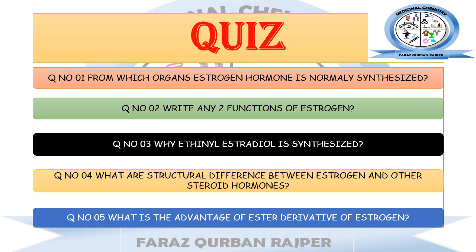Now let's have a quiz. Question 1: From which organs is estrogen hormone normally synthesized? Question 2: Write down any two functions of estrogen. Question 3: Why is ethinyl estradiol synthesized? Question 4: What are the structural differences between estrogen and other steroid hormones? Question 5: What is the advantage of ester derivatives of estrogen and why are they made? You may post your answers in the comment section. Thank you so much. Allah bless you all.